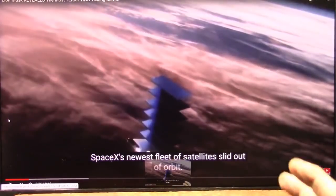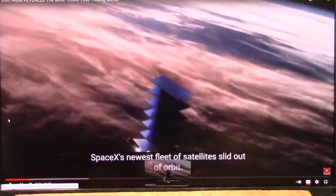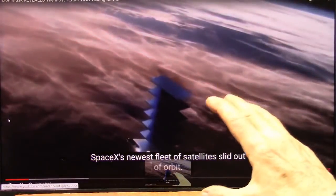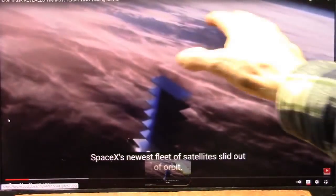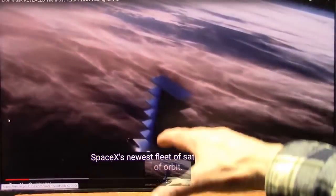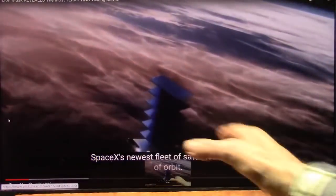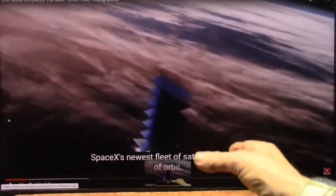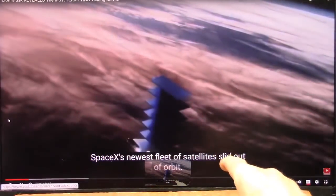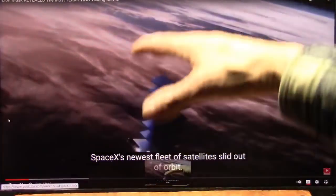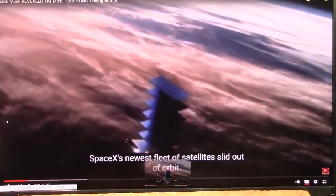This is absolutely crazy. I just did a video on how the particles in space are the only reason we have weather here on the surface, because we're impacting them. And Elon Musk just put up a bunch of satellites, and they got impacted hard and pushed them back to Earth and destroyed them.